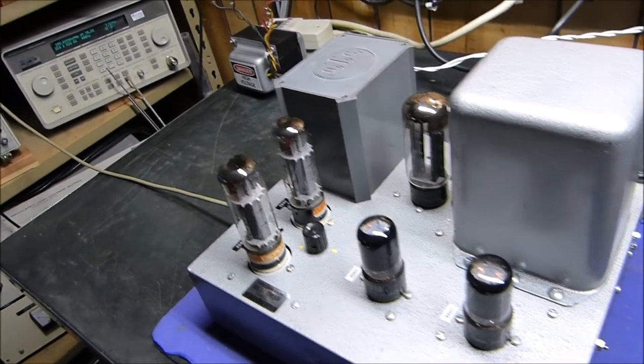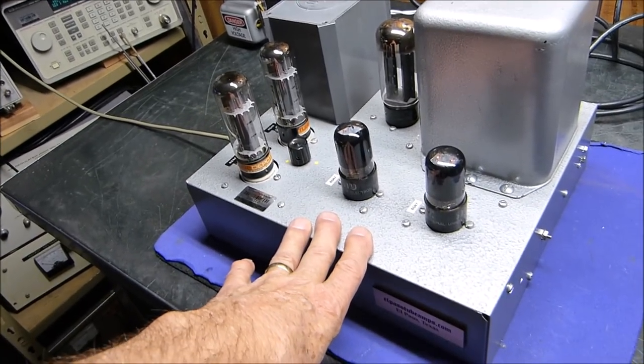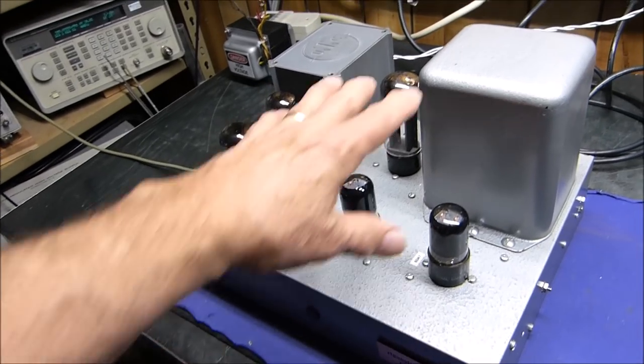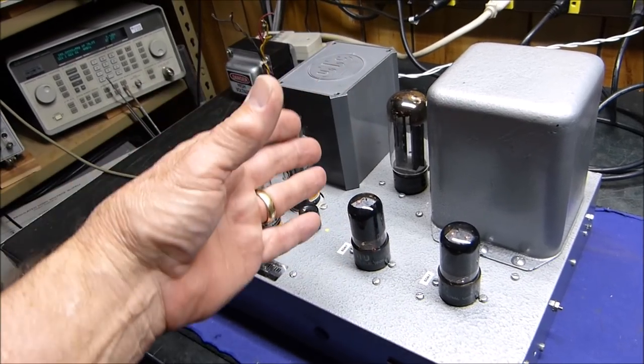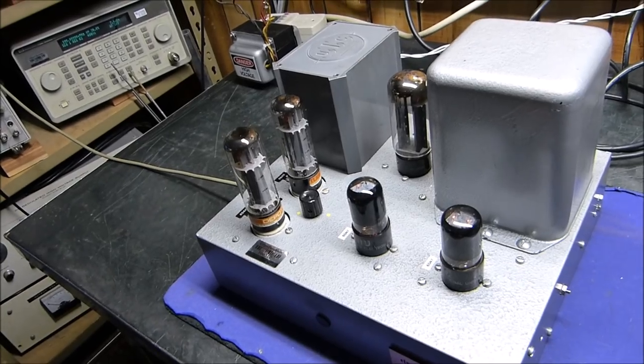One of the problems I had with this amplifier with that smaller transformer is that I had to use a choke input filter. I had to have the rectifier system as a bridge, and with a capacitor input filter, it gave me like 600 volts, which is way too much.